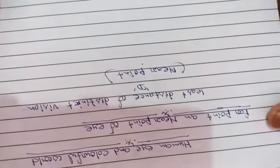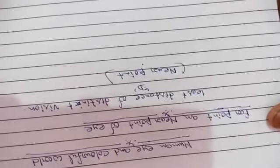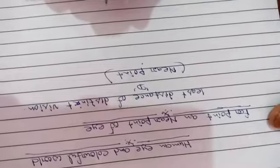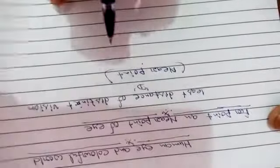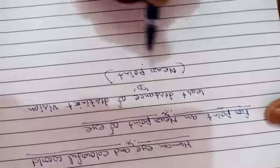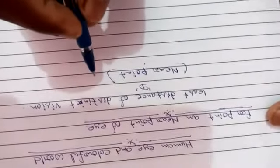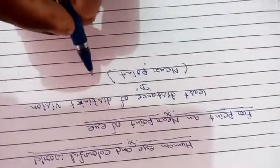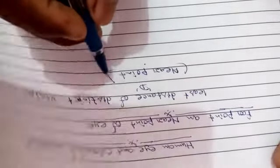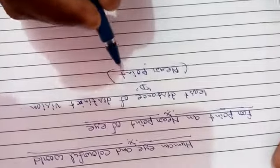For a young adult person with normal vision, the near point is situated at about 25 cm from the eye. So for a normal young adult person, the least distance of distinct vision or near point is 25 cm.